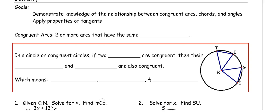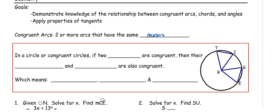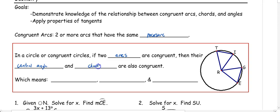In this video, we're going to demonstrate knowledge of relationships between congruent arcs, chords, and angles and apply properties of tangents. Congruent arcs are two or more arcs that have the same measure — the degrees that the arc is taking up in a circle. In a circle or congruent circles, if two arcs are congruent, then their central angles and their chords are also congruent. So if we have two congruent arcs, those chords are also congruent and the central angles are congruent, which means if we know one of them, we know them all.